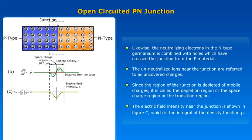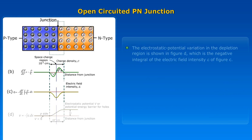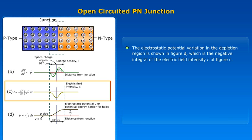The electric field intensity near the junction is shown in figure C, which is the integral of the density function rho. The electrostatic potential variation in the depletion region is shown in figure D, which is the negative integral of the electric field intensity epsilon of figure C.